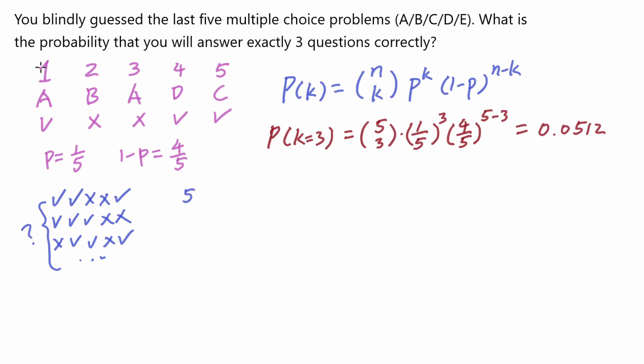We are going to choose three out of the five to be the correct answers. Alternatively, you can think of it as choosing two out of the five to be the incorrect answers. In both cases, these two formulas evaluate to the same result, and that would be 10.